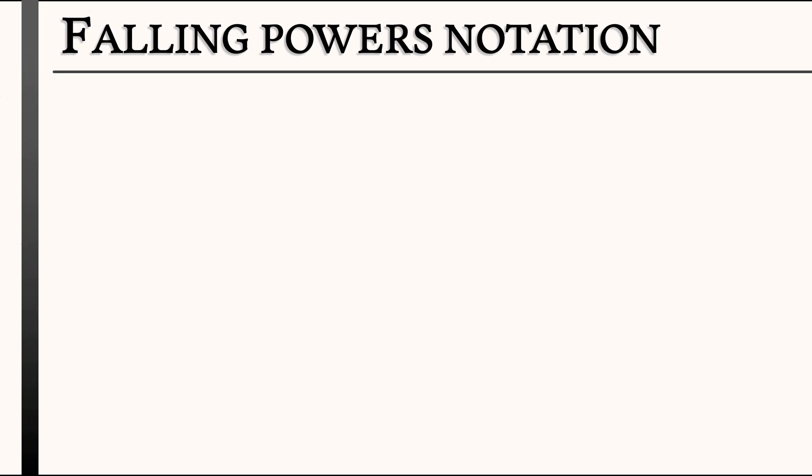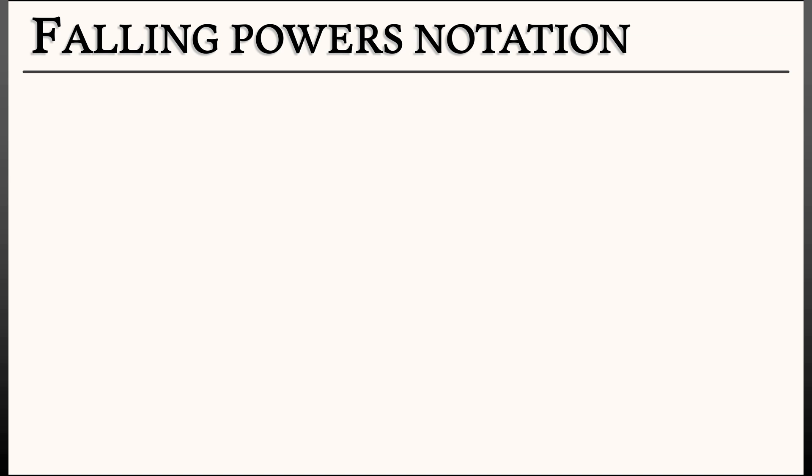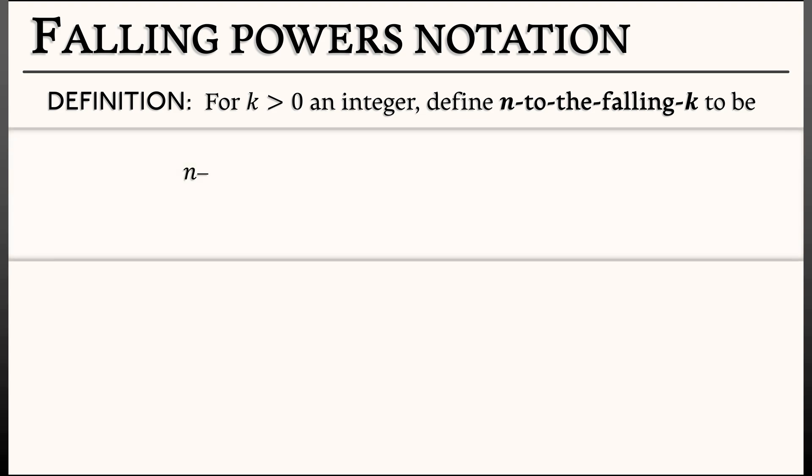This is something called falling powers notation. Here is the slightly unmotivated definition. For k, a positive integer, let's define n to the falling k to be the following. We're going to denote it n with a superscript k, but that k has an underline. That's very important. n to the falling k is n times n minus 1 times n minus 2, all the way up through n minus k plus 1.